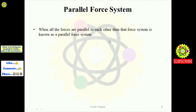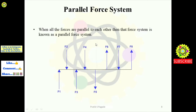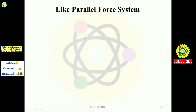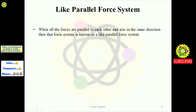Next is the parallel force system. Definition: when all the forces are parallel to each other, that force system is known as a parallel force system. In the example, forces f1, f2, f3, f4, and f5 all act vertically and are parallel to each other. Whether the forces act vertically or horizontally, as long as they are parallel to each other, it is a parallel force system.